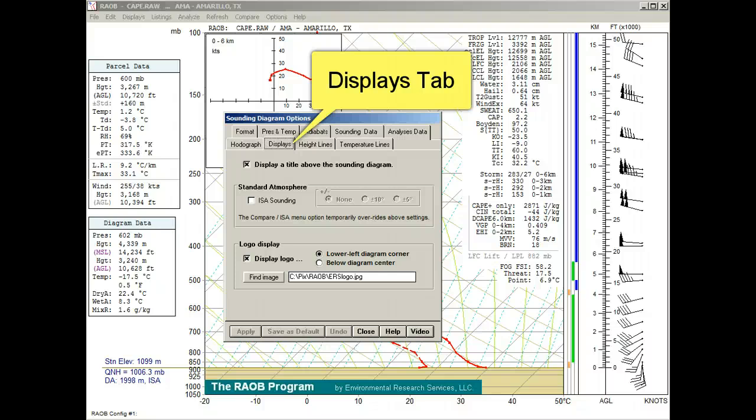The Displays Tab: this option will display the sounding title immediately above the sounding diagram. The standard atmosphere option permits plotting of the ICAO International Standard Atmosphere as reference profiles. The logo display options permit the user to display any image on the sounding diagram screen.